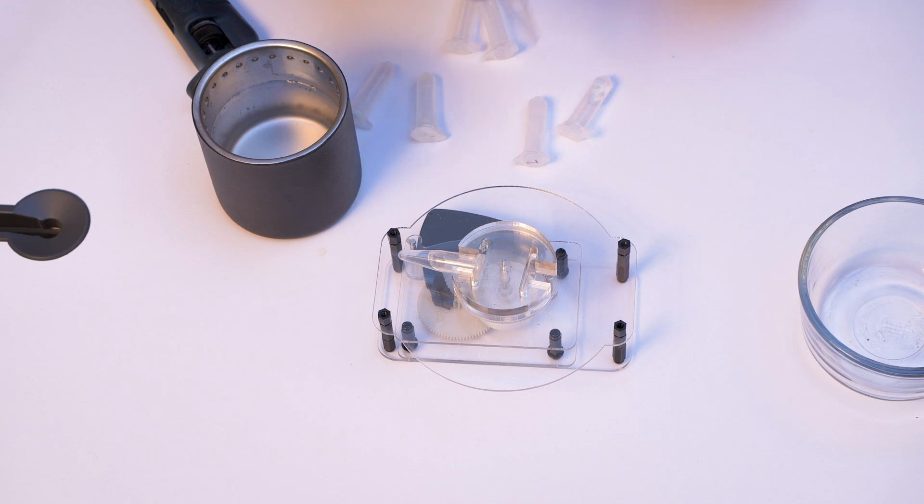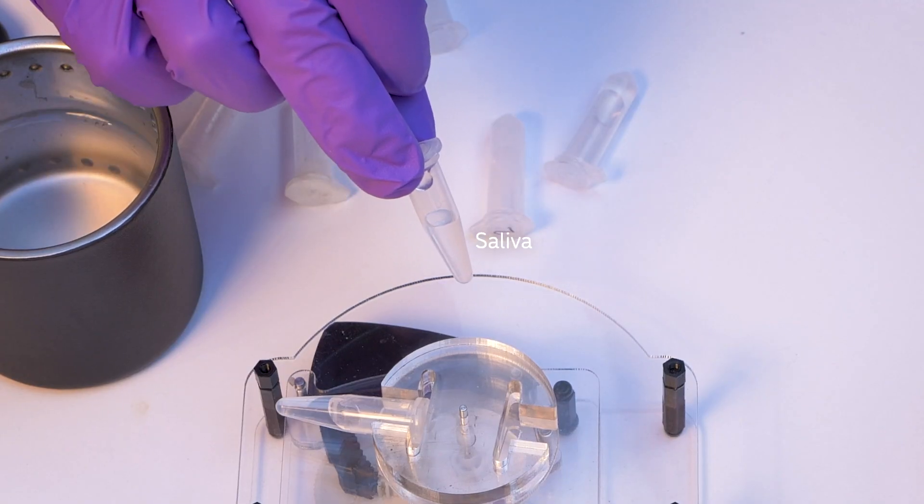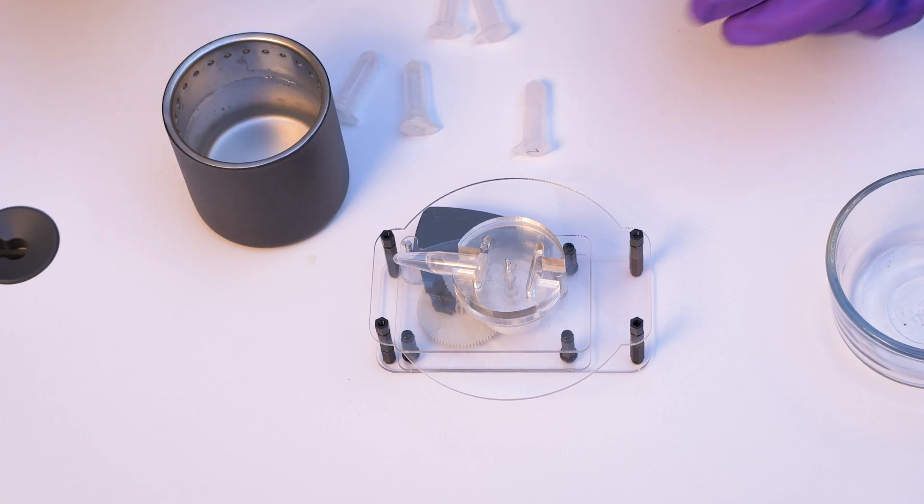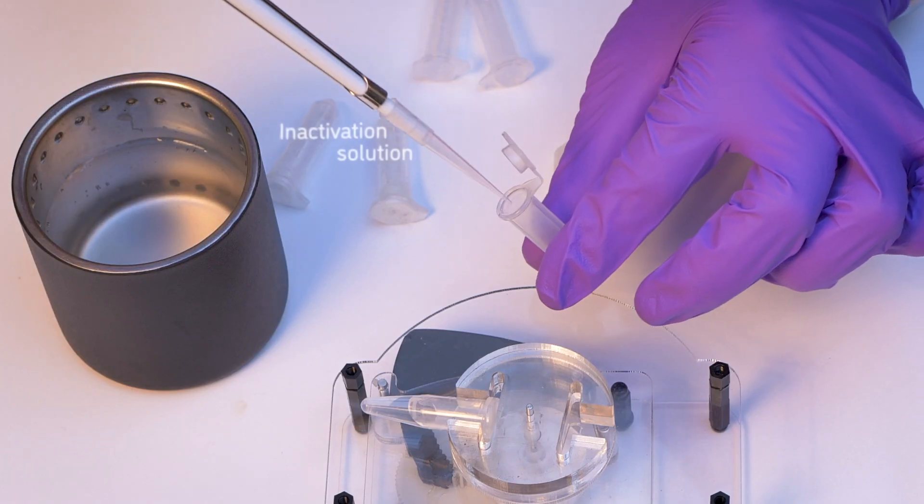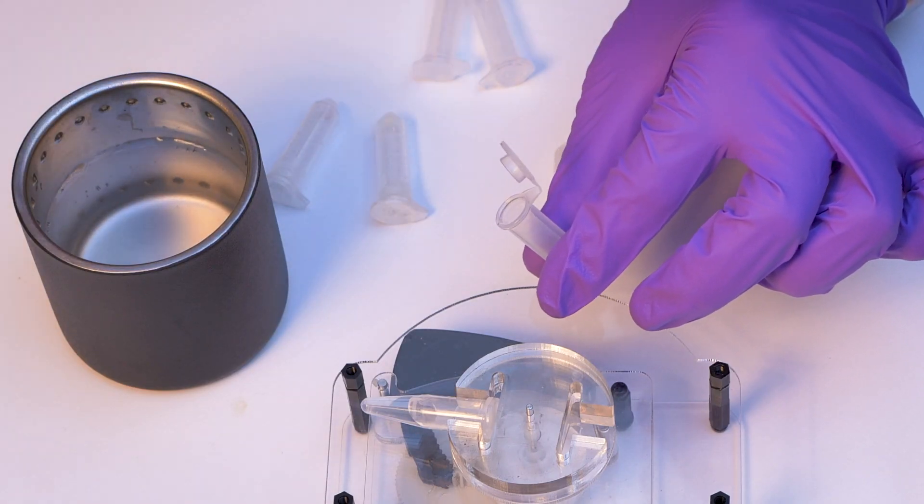The assay starts with collecting saliva. So we collect about half a milliliter. And after that, what we need to do is inactivate the saliva. So we have this inactivation solution. And this will do two things.